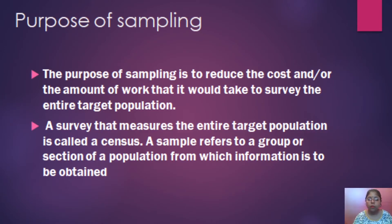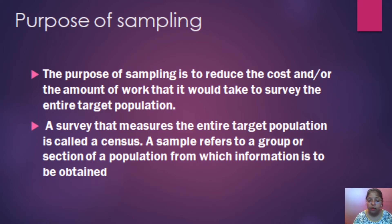The reasons why we do sampling include greater accuracy — though less compared to census — greater speed of data collection, and availability of population elements. Some situations also require sampling; for example, when the breaking strength of material is to be tested, it has to be destroyed, and a census method cannot be used. So sampling is very important for researchers.